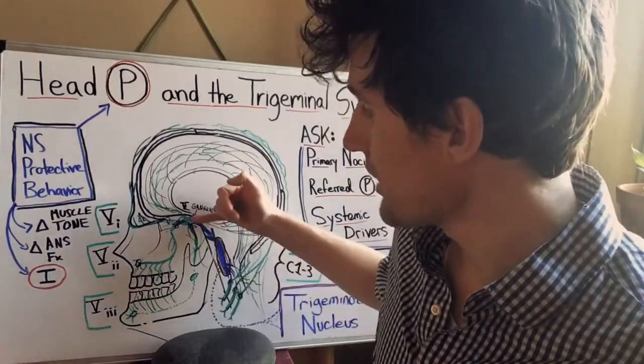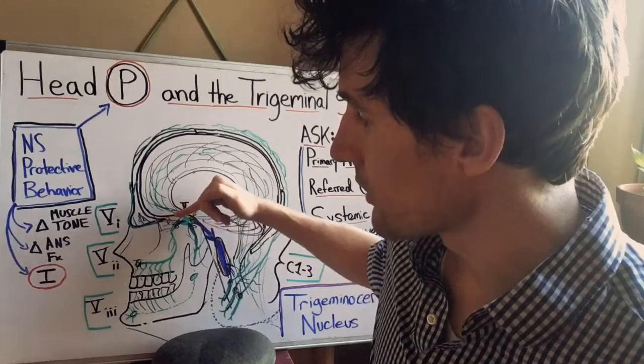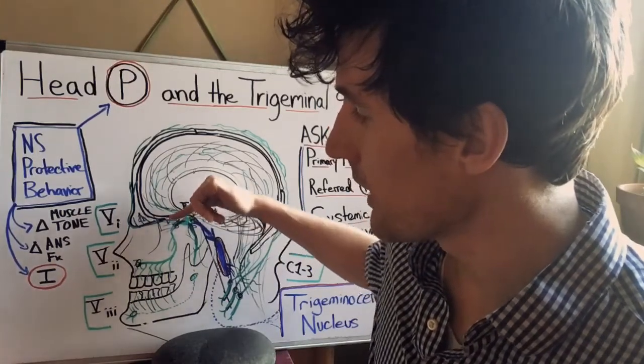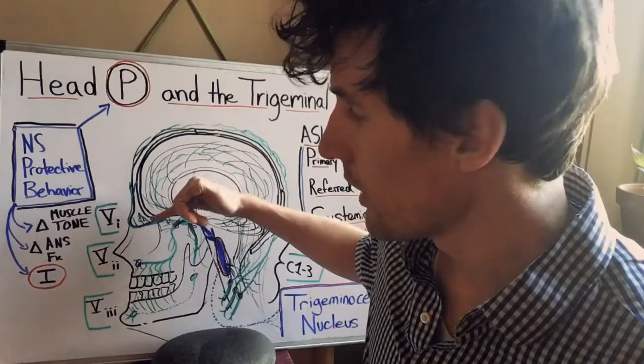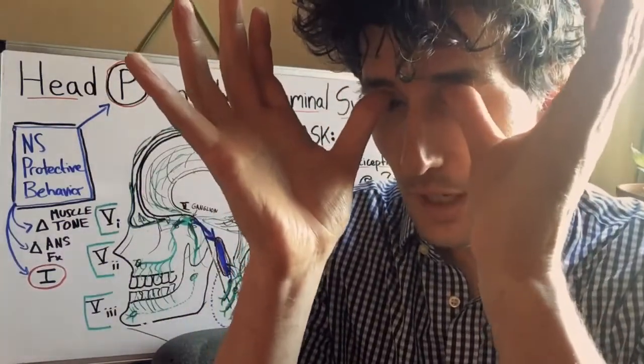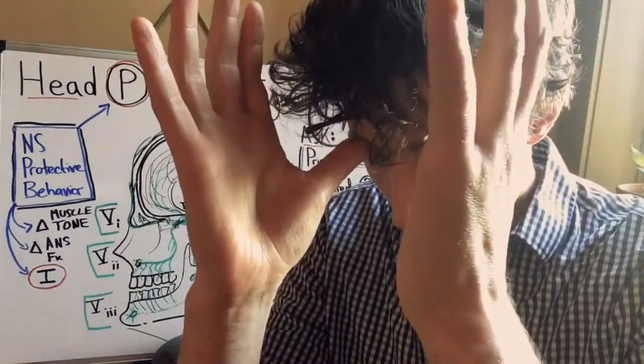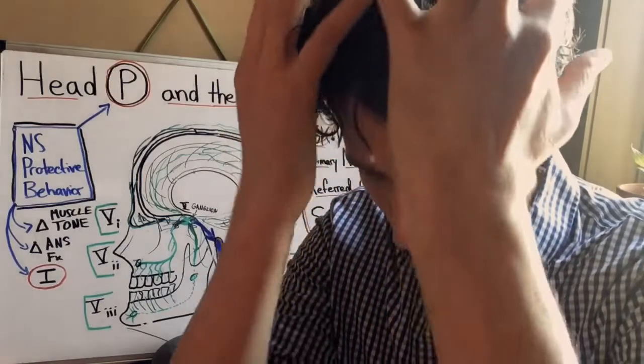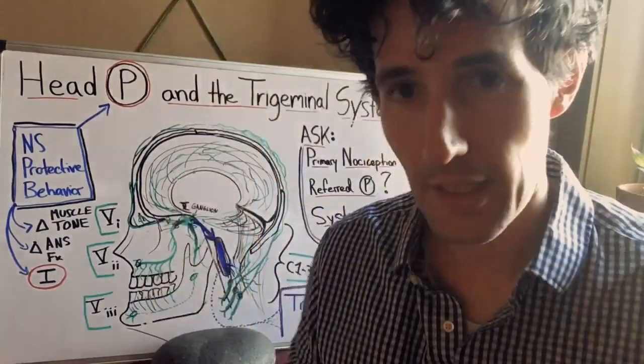The trigeminal one branch is called the ophthalmic nerve and it perforates through the sphenoid and then it courses along the upper orbit of the eye and then emerges over the eyebrow and flows over the forehead and the top of the head.